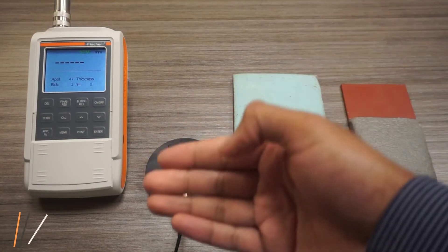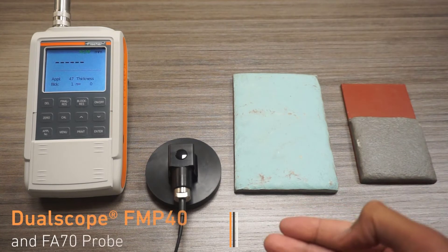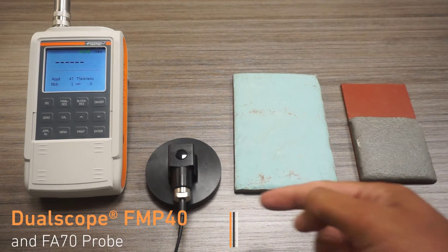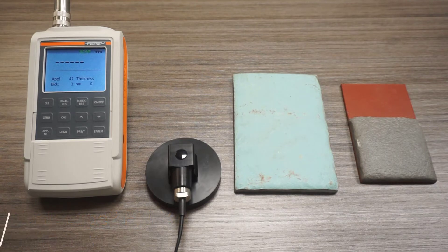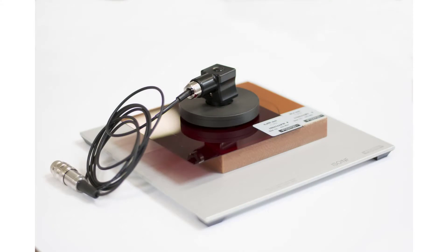I have a dual scope FMP40 with an FA70 probe to demonstrate its measurement capabilities on applied intumescent coatings over structural steel. The FA70 probe ships with these two certified standards and a base plate. The thinner standard is 18.2 mils and the thicker one is 799 mils, so it covers a wide range of coating thicknesses.